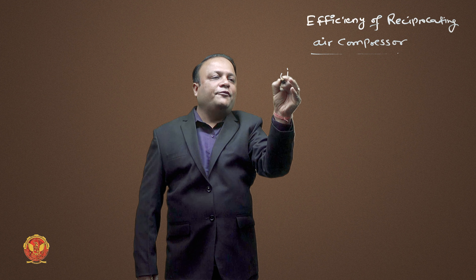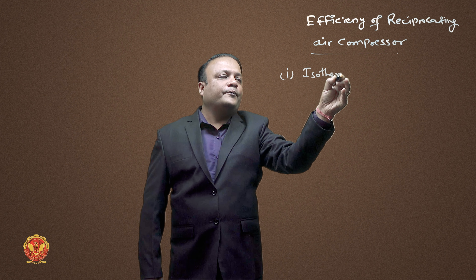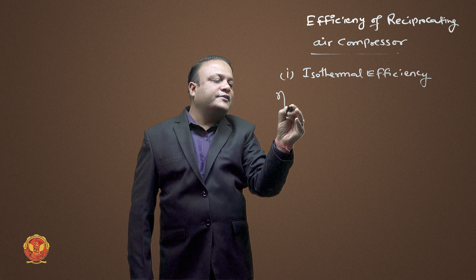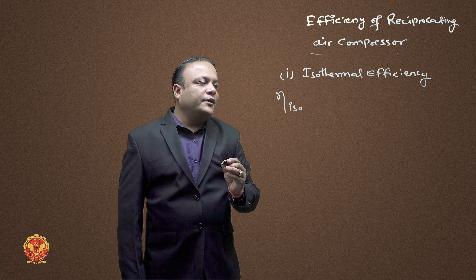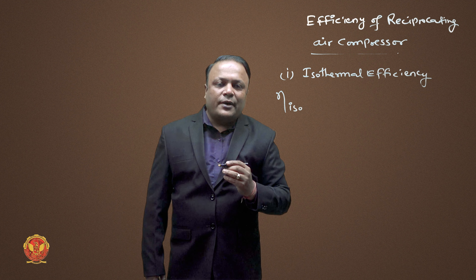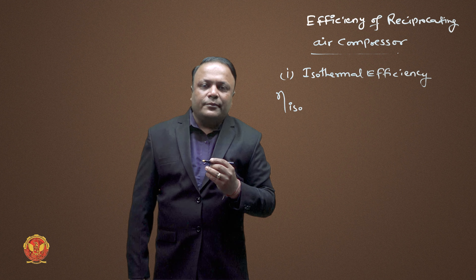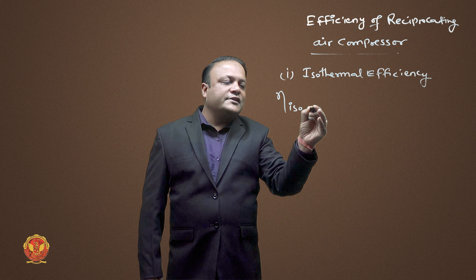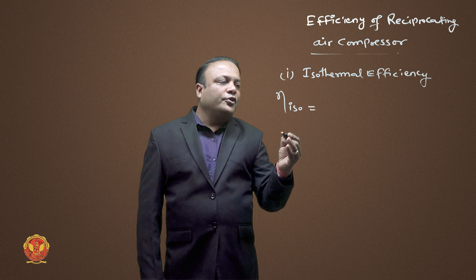Dear students, today we will talk about the efficiency of reciprocating air compressor. The first efficiency is isothermal efficiency, written as eta_ISO. We know that two types of power are generated: one actual power and one hypothetical power. The hypothetical work done is isothermal, but the actual work done is indicated work done. Efficiency is output upon input, and here the output is isothermal.